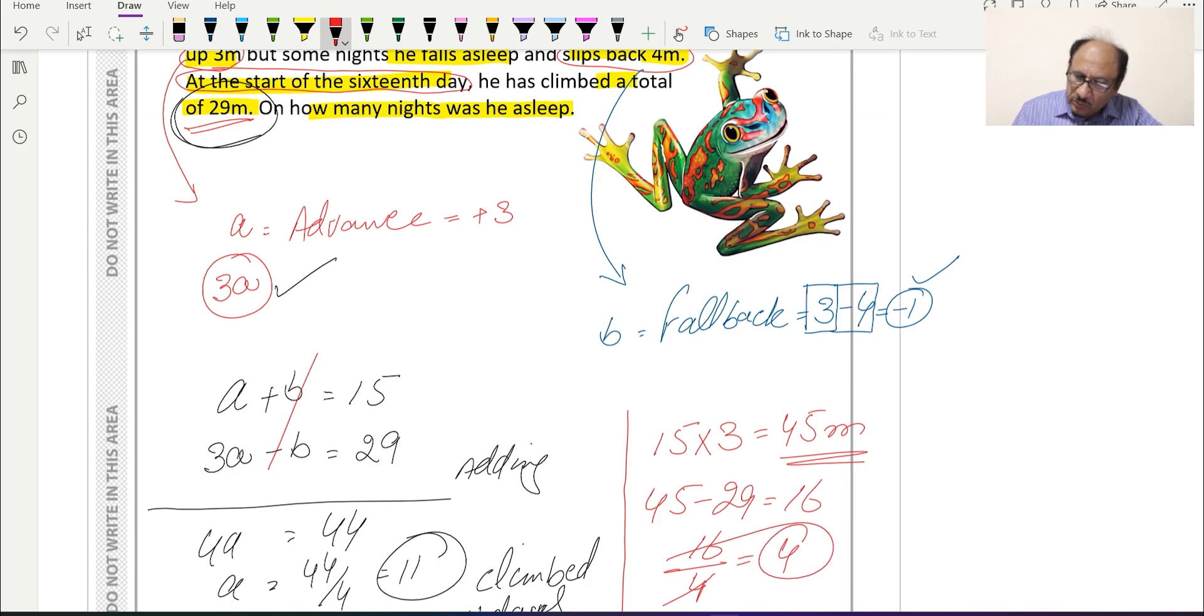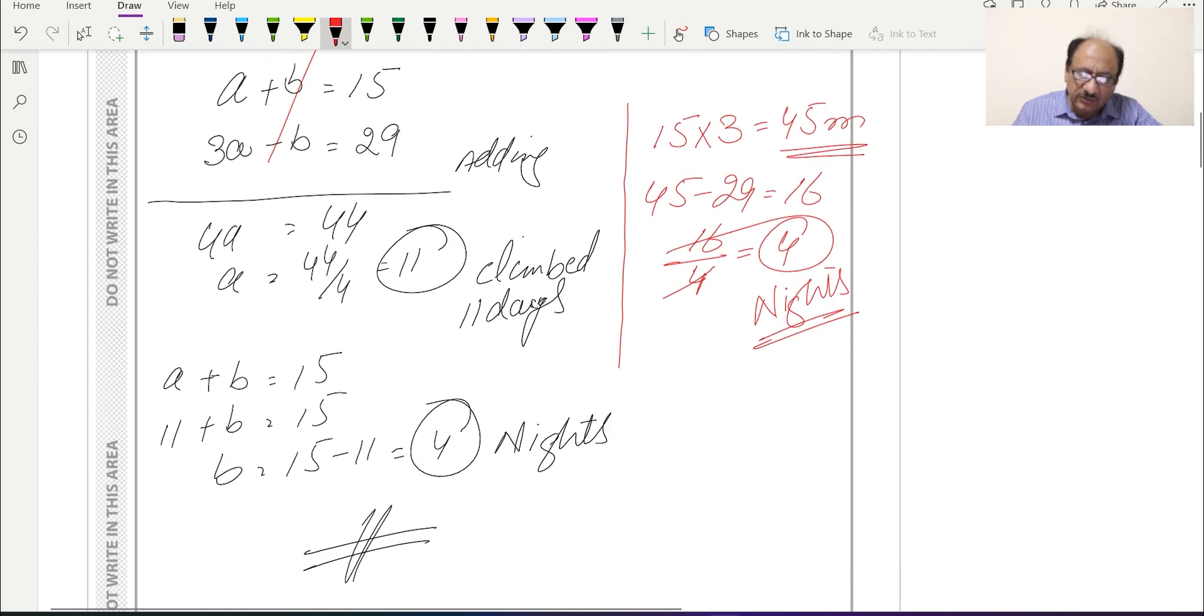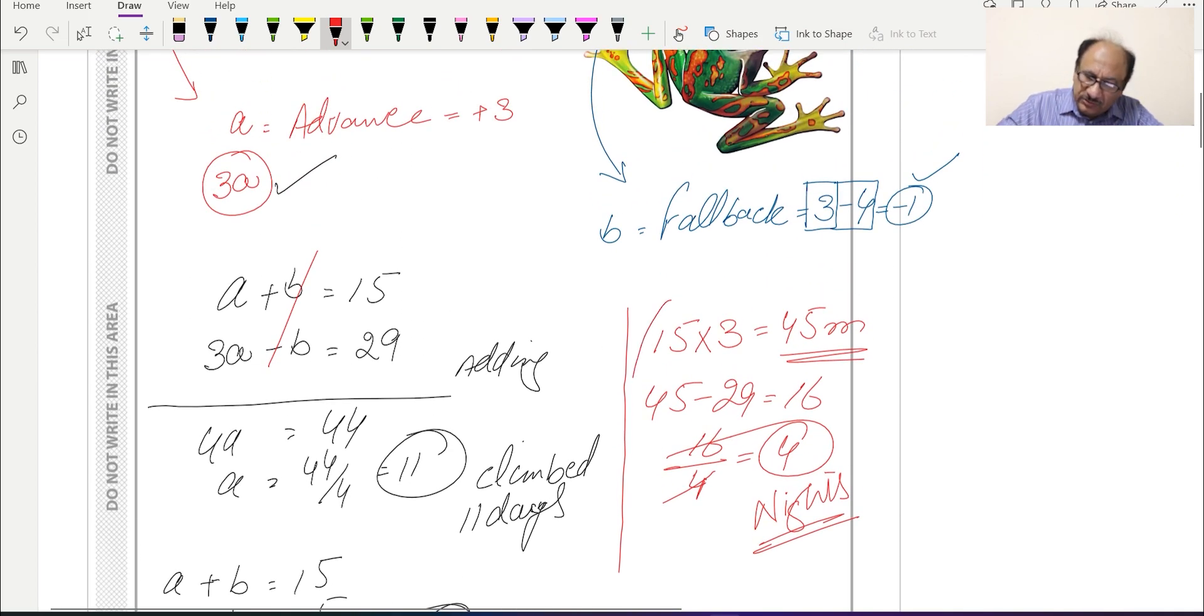So 16 divided by 4, for each night the frog is sleeping 4 meters, so it will be 4 nights. In this method also we can get 4 nights. The proper way is simultaneous equations method, and for your understanding I have explained this separately also.